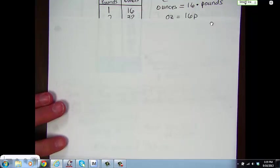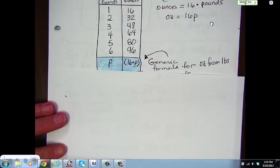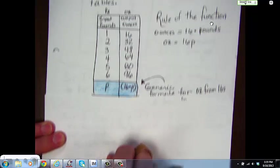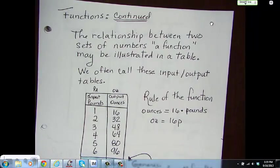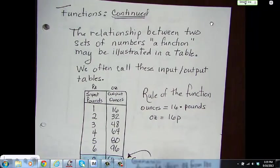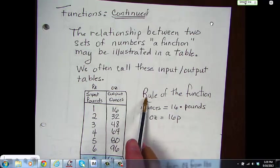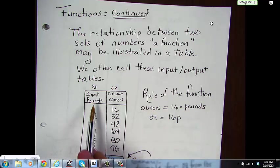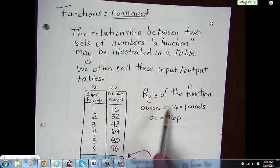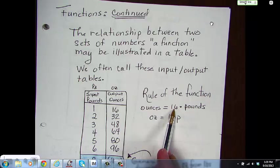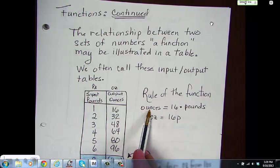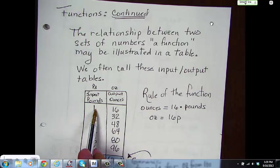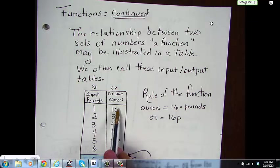Here is an example. We're using something that we already know that we're comfortable with. The rule of this particular function is pounds times 16 will give you the ounces. So, if I have one pound, I multiply that times 16, that will give me 16 ounces. Two pounds, 32 ounces.